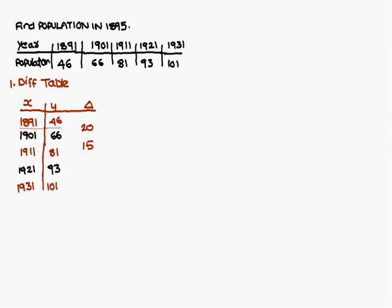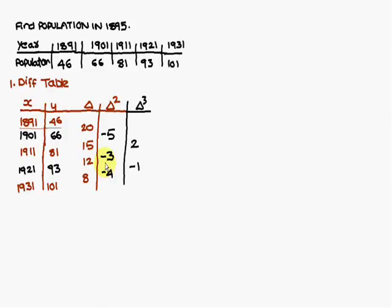So 81 minus 66 the difference is 15. Similarly 93 minus 81 the difference is 12, and 101 minus 93 the difference is 8. Next we find the second differences: 15 minus 20 is minus 5, 12 minus 15 is minus 3, and 8 minus 12 is minus 4. Then the third differences: minus 3 minus of minus 5 equals plus 2, and minus 4 plus 3 equals minus 1. Finally the fourth difference: minus 1 minus 2 equals minus 3. This is the way to construct a difference table.